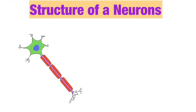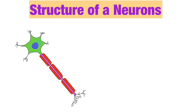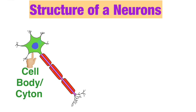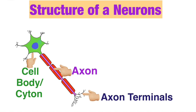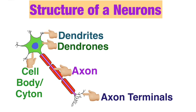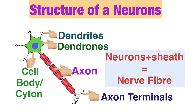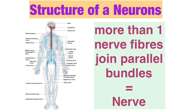Let us now see how a neuron looks like. The structure of a neuron can be broadly classified into three parts: the cell body or cytone, the axon, and the axon terminals. From the cell body originate short processes called dendrons, and the dendrites are the branchings of the dendrons. The axon is a single long cylindrical process which branches at the terminal end — these branching terminals are known as axon terminals. When neurons are enclosed in a sheath they form a nerve fiber, and more than one nerve fiber bound together in parallel bundles forms a nerve.